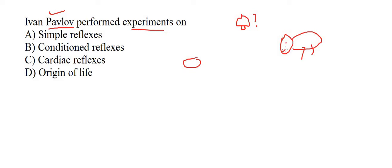These were called conditional reflexes. If we give a condition to someone, they also respond with reflexes. For example, the dog was given the bell as a condition, and as a reflex, saliva was produced. It became a habit that when the bell rings, food would come.